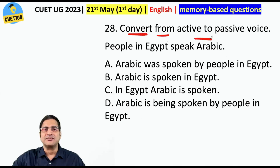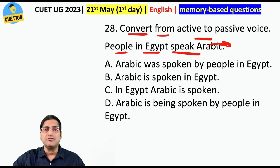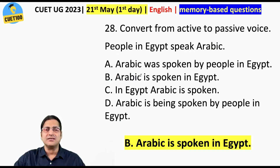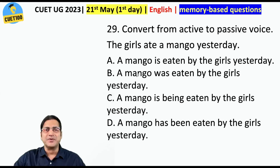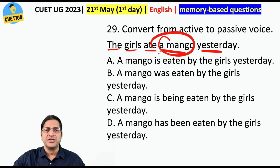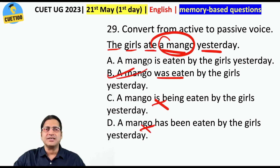Convert from active to passive. 'People in Egypt speak Arabic.' Arabic should become the subject — 'Arabic is spoken in Egypt.' Next: 'The girls ate a mango yesterday.' The object 'mango' becomes the subject. 'A mango is being eaten' — no, that's wrong tense. 'A mango has been eaten by the girls' — no. Answer: 'A mango was eaten by the girls yesterday.' Straight away option B.